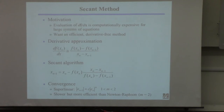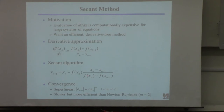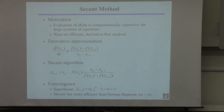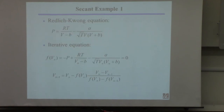It doesn't come for free. To implement this, you have to guess the answer, but there's a quandary: to generate x1 you need x0 and also x minus 1. You can't take x0 and x minus 1 to be the same — that would make the denominator zero and the formula singular. So you need two initial guesses, and they must be different from each other.